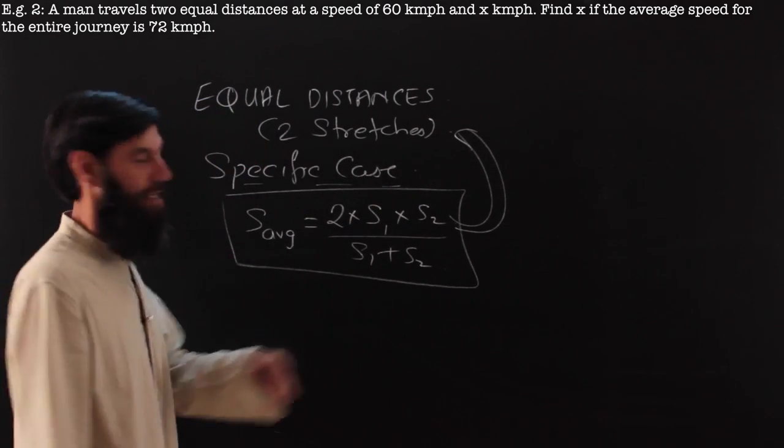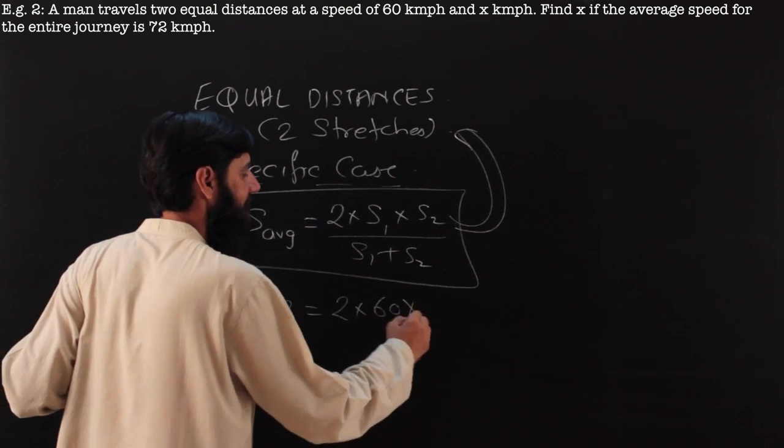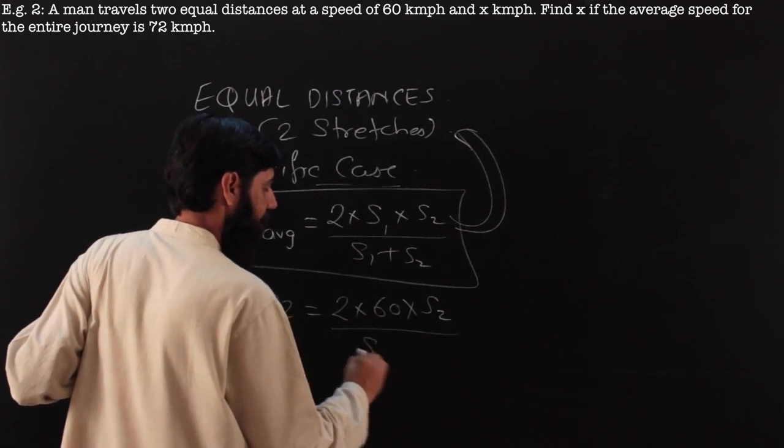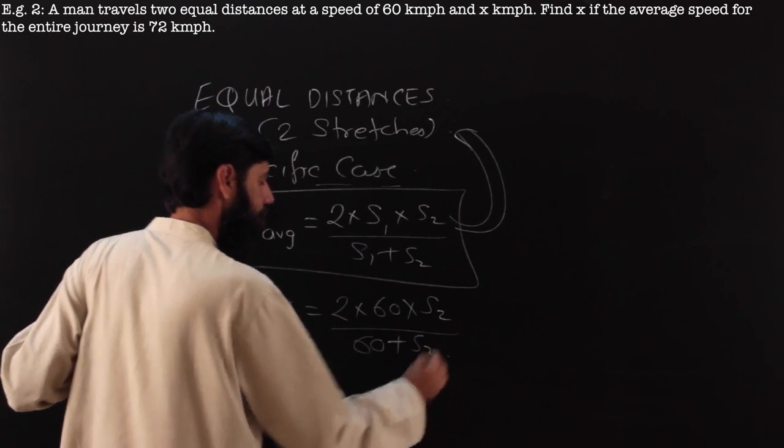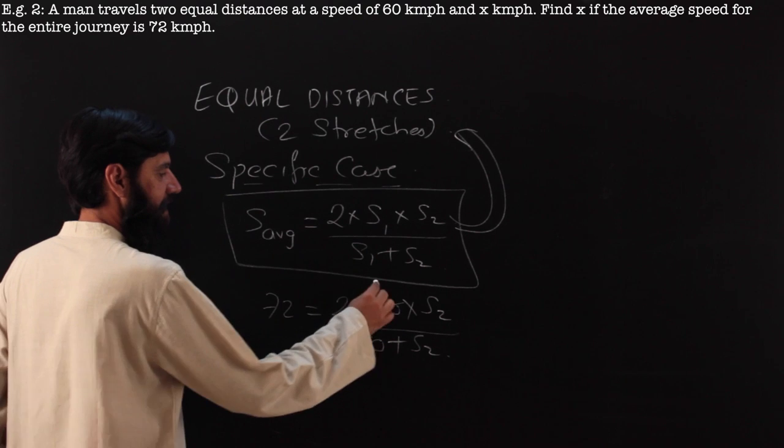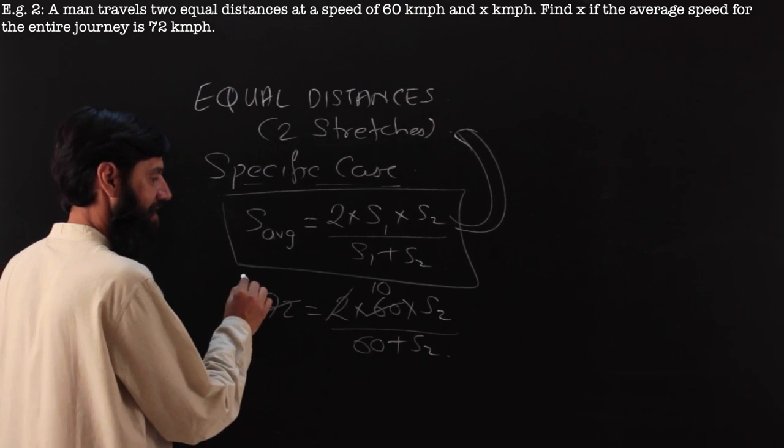I can use this wherever there are two stretches with equal distances. It just boils down to plugging in the values. The average speed is given to me as 72. One speed is 60, the other speed is unknown. So I will do 60 plus s2. 6 12s are, 12 cancels with this 6.